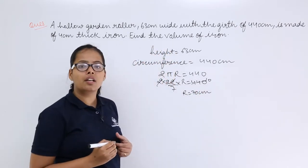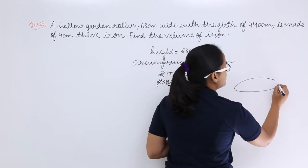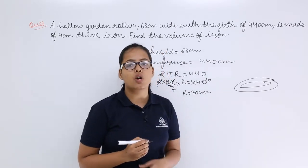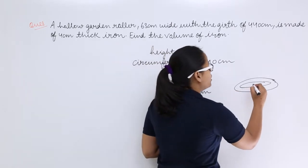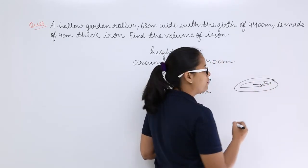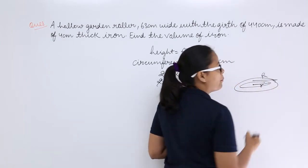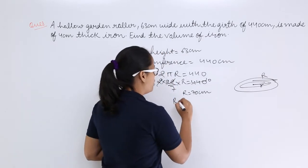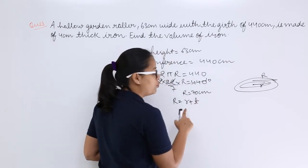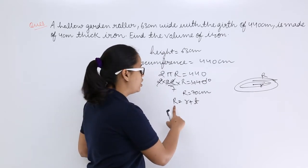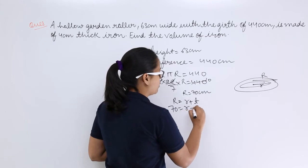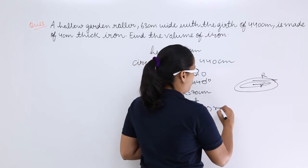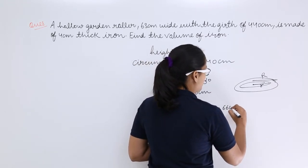Now let's calculate the internal radius. This is the external circle and this is the internal circle — this face is the bottom face of the hollow roller. You need to find the smaller radius. The outer radius, capital R, is 70 centimeter and the thickness has been given as 4 centimeter. The external radius equals the internal radius plus the thickness. So the internal radius is 70 minus 4, which is 66 centimeter.